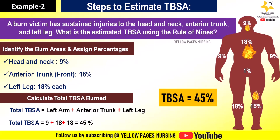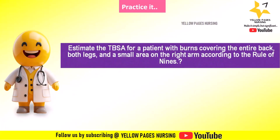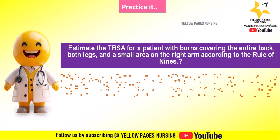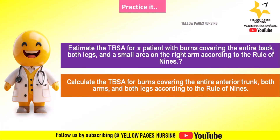Here are a few examples for your practice. Estimate the total body surface area for a patient with burns covering the entire back, both legs, and a small area on the right arm. Next, calculate the total body surface area for burns covering the entire anterior trunk, both arms, and both legs, according to the Rule of Nines. You can do the calculations and mention the answers in the comment box.